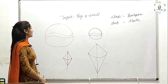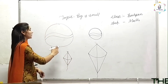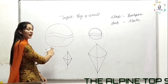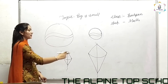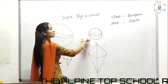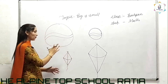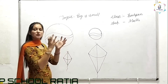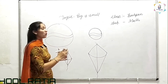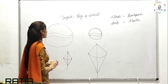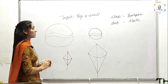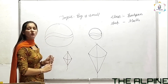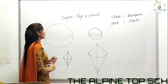Look at the blackboard. Which one is big or small? This is a big ball and this one is a small ball. Big ball, small ball. Now we will circle the small ball.